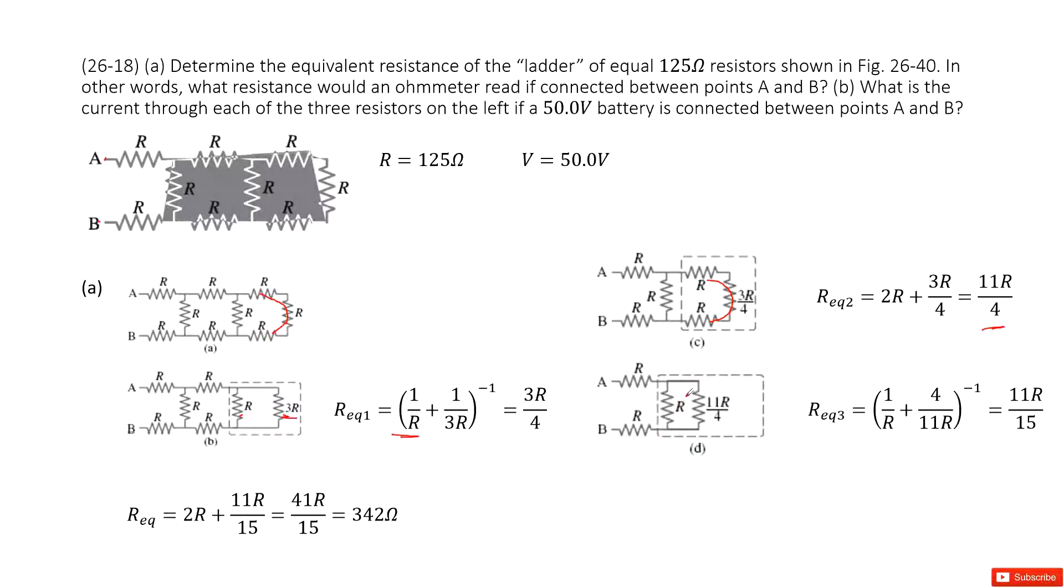And then we can draw another picture box. You can see this is R in parallel connection with 11R over 4. So we use this function to get the equivalent resistance for the parallel connection. And then it becomes 11R over 15.